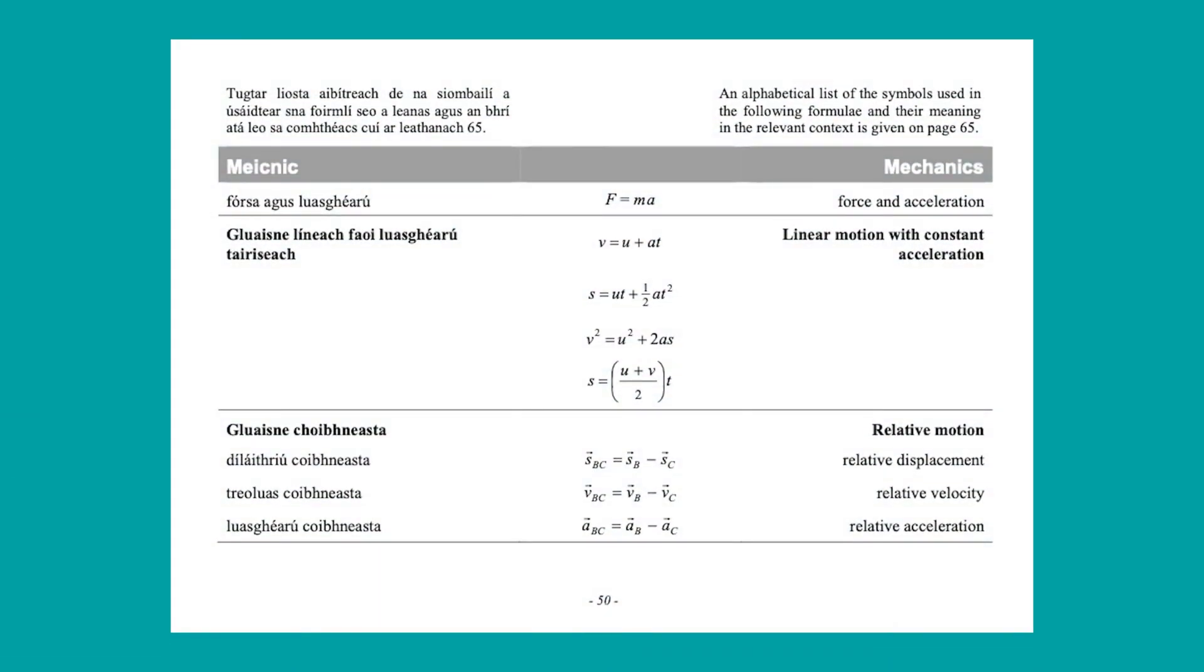Just before we begin parts a and b, I'd like to draw your attention to page 50 of the formula and tables book, in particular the formulas v equals u plus at and s equals ut plus a half at squared under linear motion with constant acceleration.